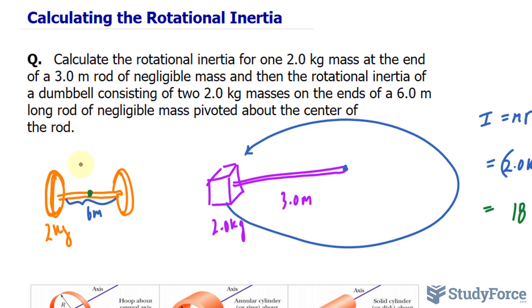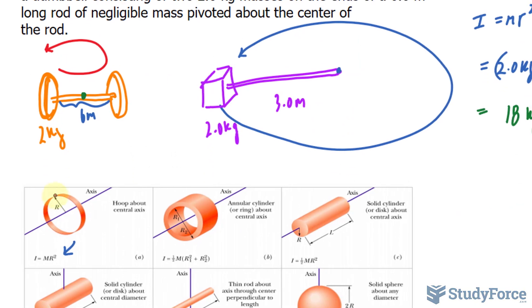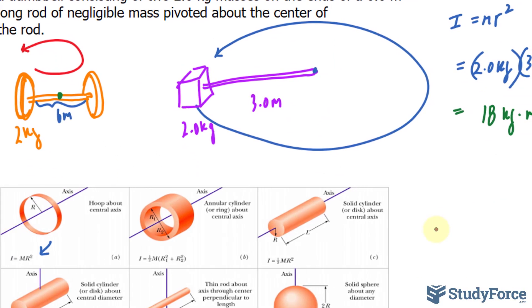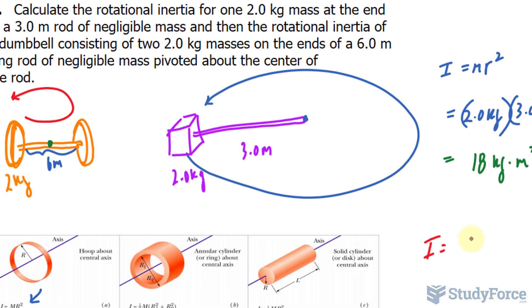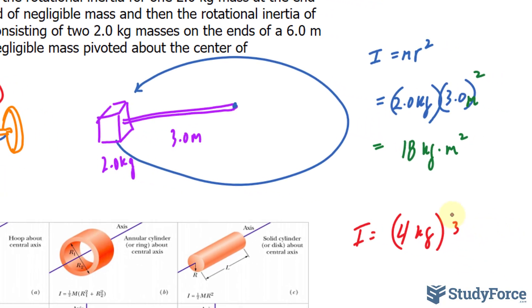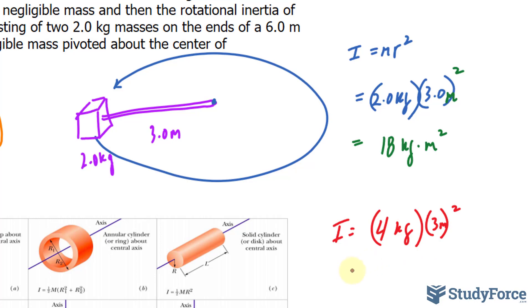To give you an idea of how this would be rotated — it would look something like this — we're rotating it at the center. Using the same formula, I is equal to the total mass of 2 plus 2, which is 4 kilograms, times the radius of 3 meters raised to the power of 2. So we end up with 4 times 9, being 36 kilograms times meters squared.